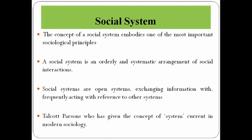We can start with the concept of social system. The concept of social system embodies one of the most important sociological principles: that the whole is more than the sum of its parts. Simply, a social system is an orderly and systematic arrangement of social interactions, where every part has a fixed place and a definite role to play, and all these parts are bounded by interactions.